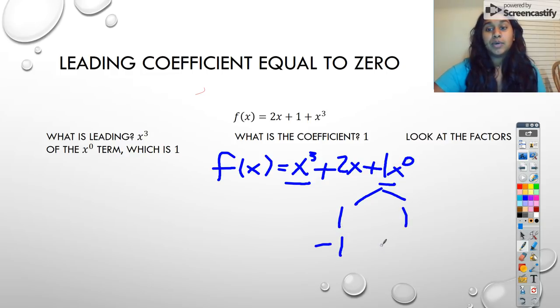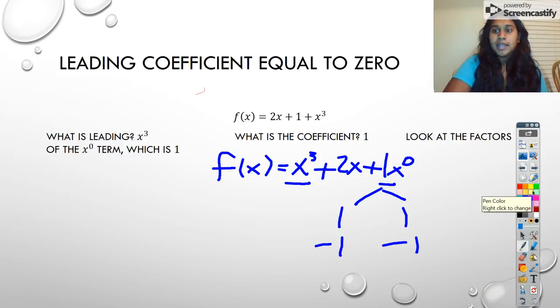Its factors are 1 and 1, and technically negative 1 and negative 1 would all multiply back to get me a positive 1. So I'm going to test all those factors, 1 and negative 1.